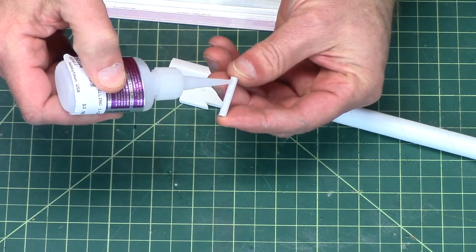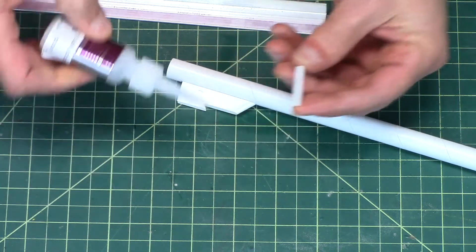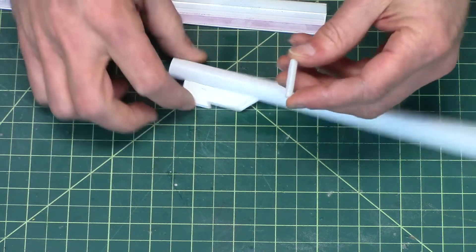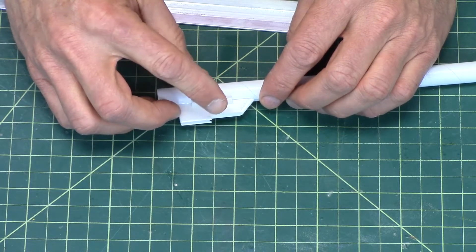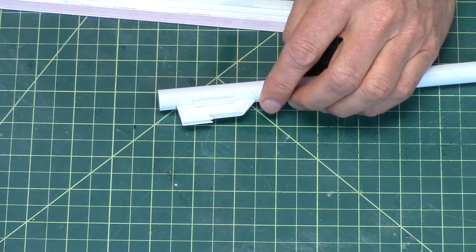So again, I'm going to use super glue here, because I'm gluing against that plastic. And just put that there, and let it dry.